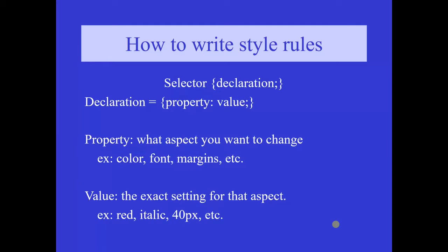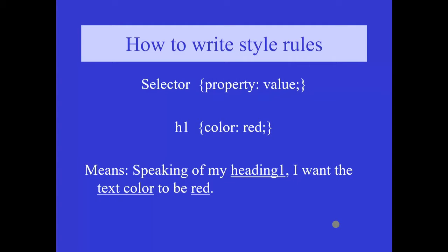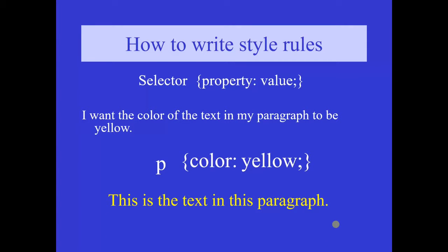What is property? It is the aspect you want to change — example: color, font, margins, etc. What is value? It is the exact setting for that aspect — example: red, italic, 40 pixels, etc. Essentially: the thing you want to change, colon, what you want it to be. For example, h1 with color colon red means that for heading 1, I want the text color to be red. Consider an example where I want the color of the text in my paragraph to be yellow — I give p with color colon yellow.